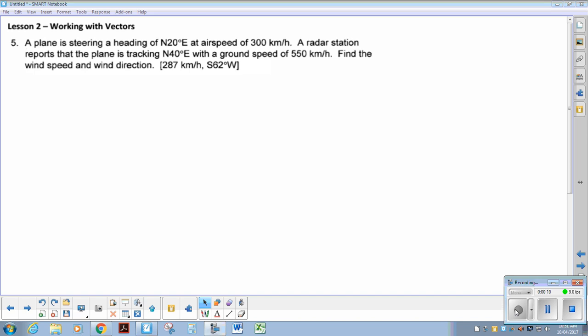A plane is steering a heading of north 20 degrees east. Again, as soon as I see that compass direction, I need to give myself a picture. So I have north, east, let's look in west. So it's north 20 degrees east. So that's where the plane's pointing.